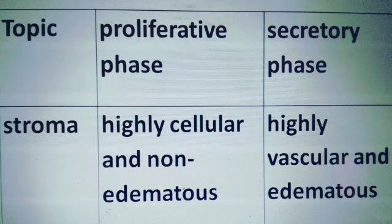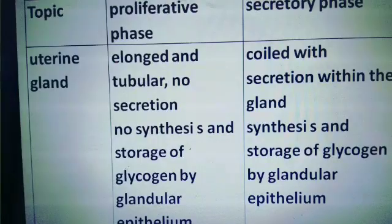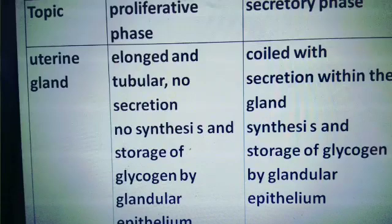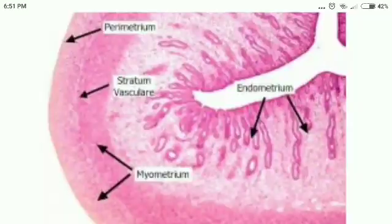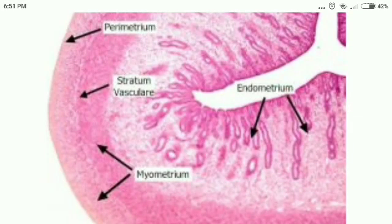In the proliferative phase, the stroma is highly cellular and non-edematous, but in the secretory phase it is more edematous and highly vascular. Regarding the uterine glands: in the proliferative phase they are elongated and tubular, but in the secretory phase they are coiled with secretion present within the gland.